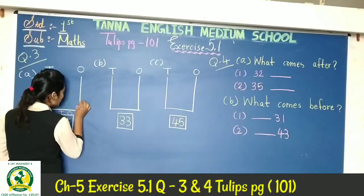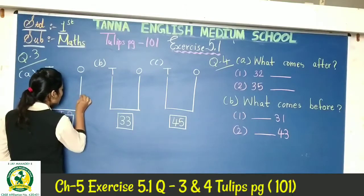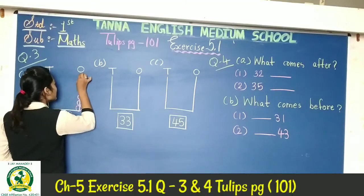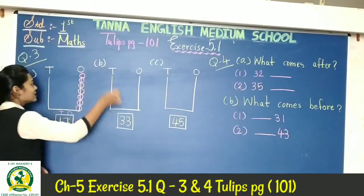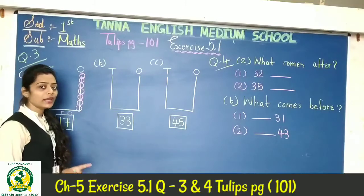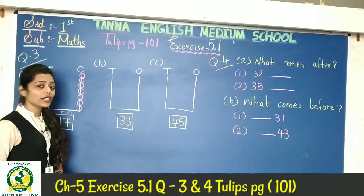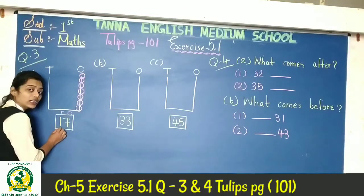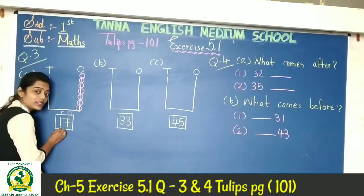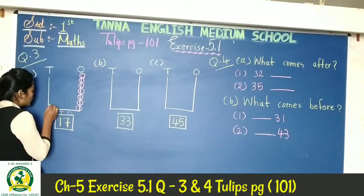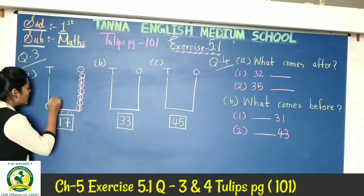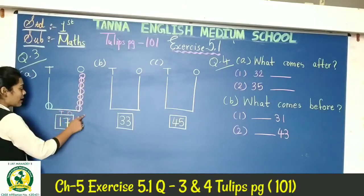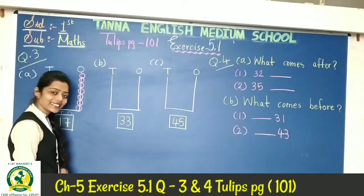So we count: 1, 2, 3, 4, 5, 6, 7 — 7 beads in the ones place. Now in the tens place we have 1, so you can draw 1 bead there. So for the number 17 we draw 7 beads and 1 bead.